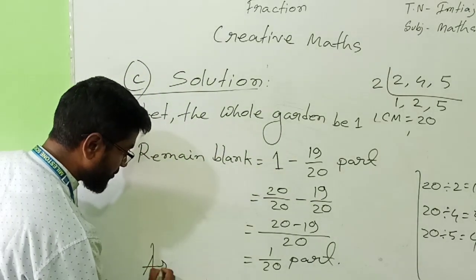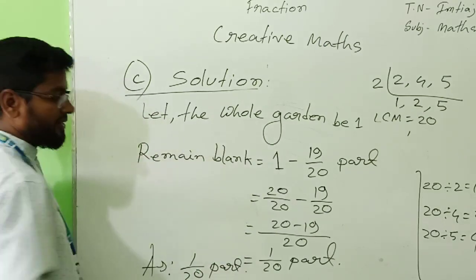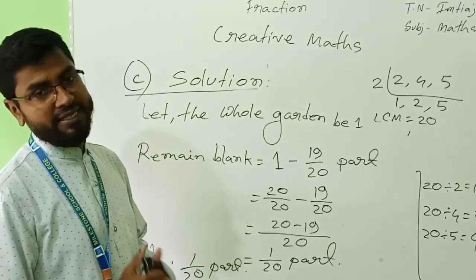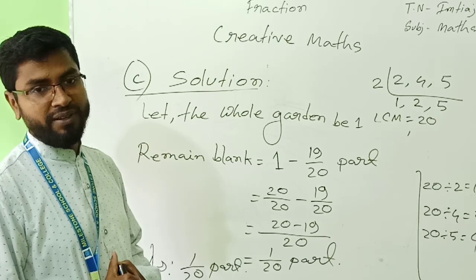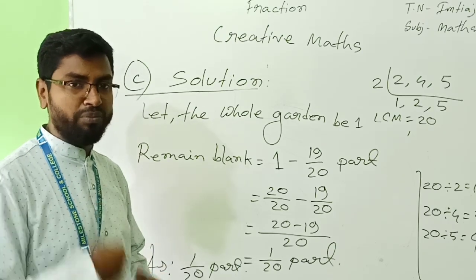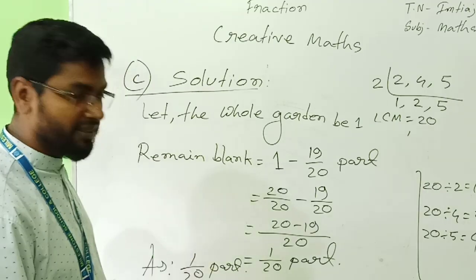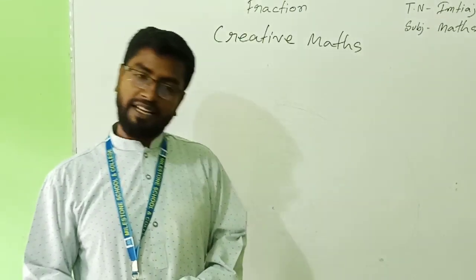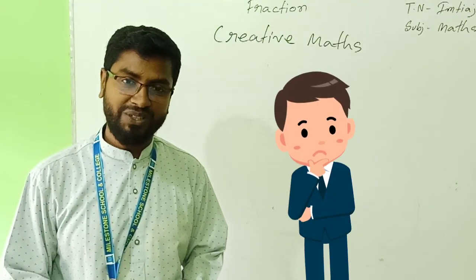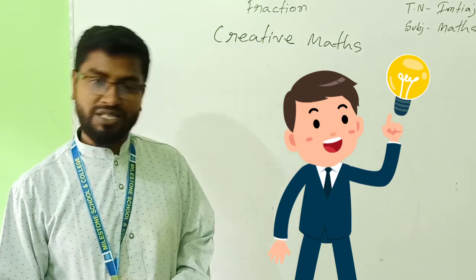Next question: how much part is remaining blank? So the farmer did not plant any crops over there, that part we need to find out. So for finding, we need to think one thing: that is total garden. Let the whole garden be 1. That means this full garden is one. We know the fraction is always a part of a thing. Whole garden is one. Now remain blank equals 1 whole minus what was the planted part, 19/20 part. Look, it is one. One means 20/20. 20/20 minus 19/20. So subtract it: 20 minus 19 by 20, what will be here? 1/20 part. This is the answer for remain blank. You must try this. I hope you have understood this creative maths. You will practice at your home. And if you have any problem, you can contact with us by phone call. Thank you for watching this class. Hope you have enjoyed. Today class is over. Thank you. Assalamualaikum.